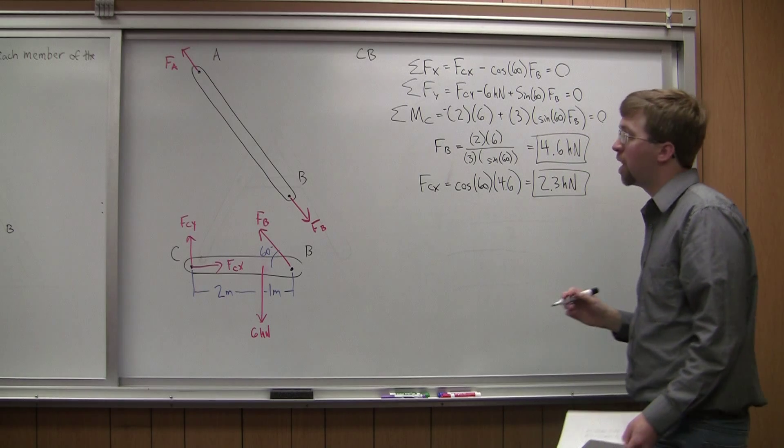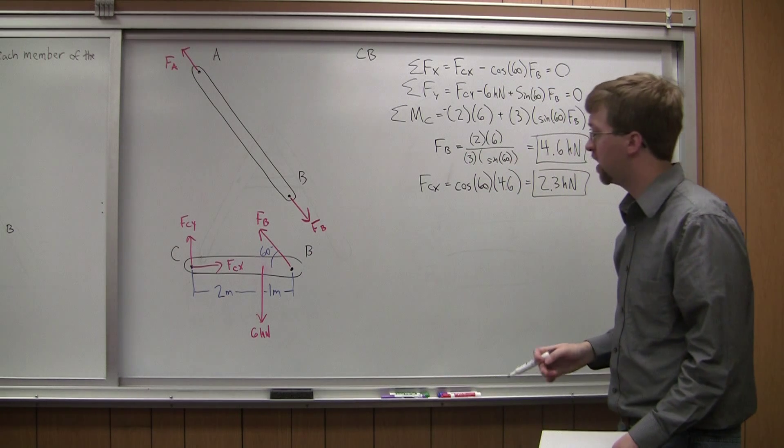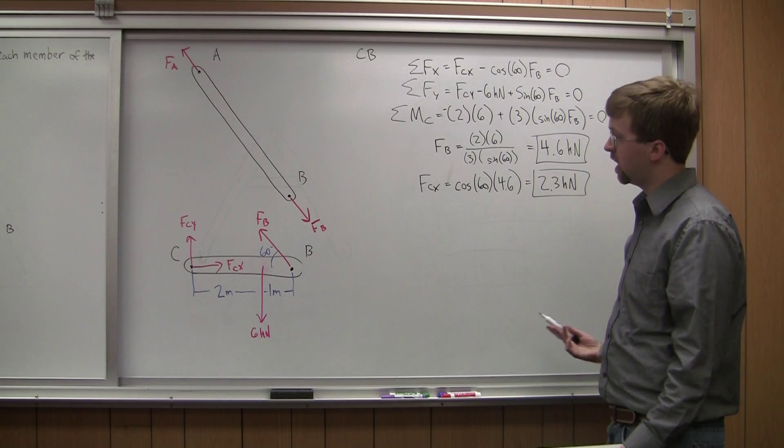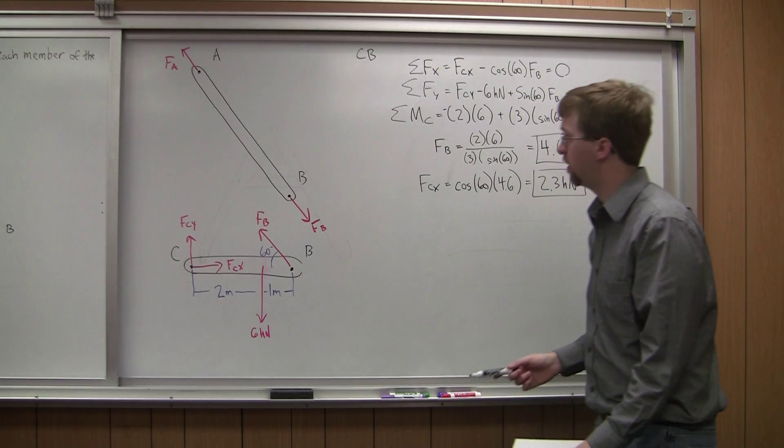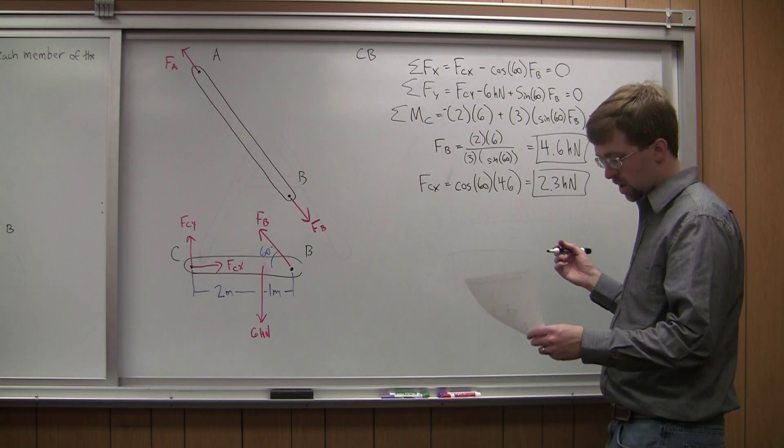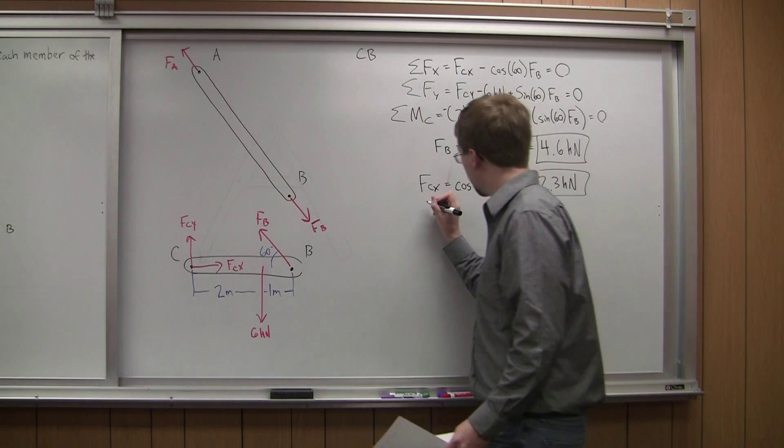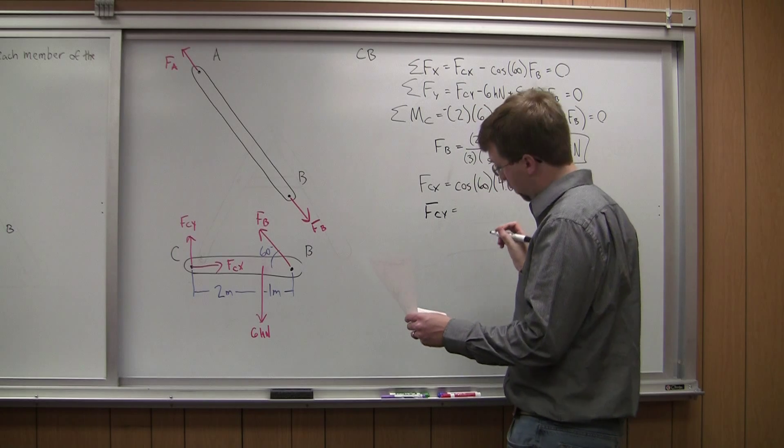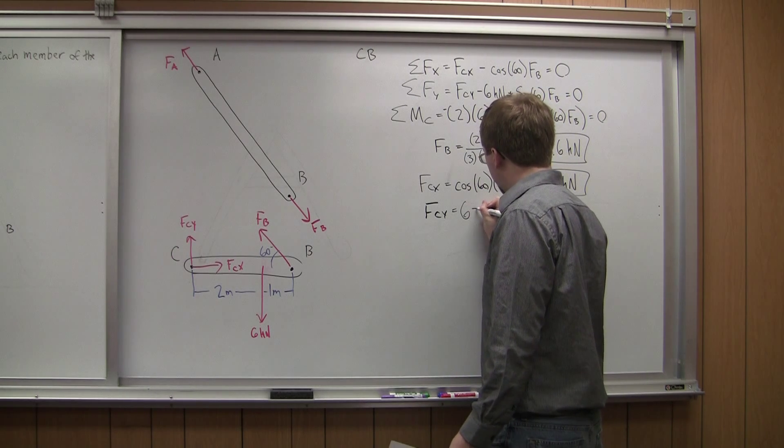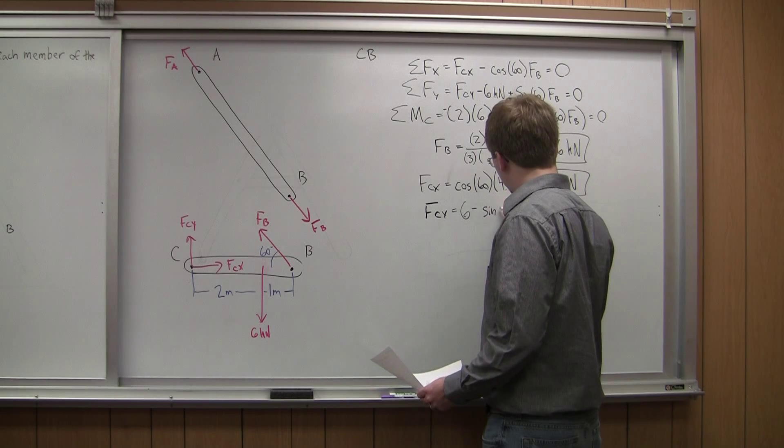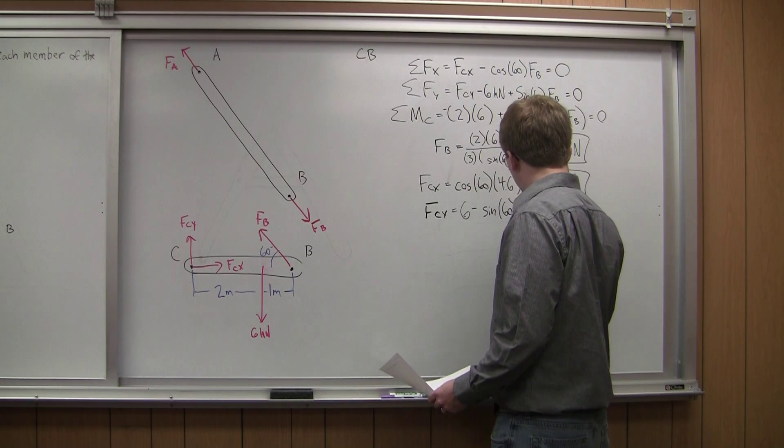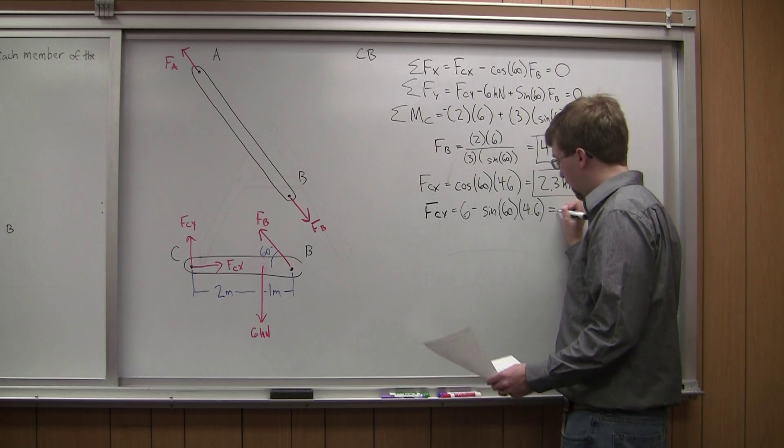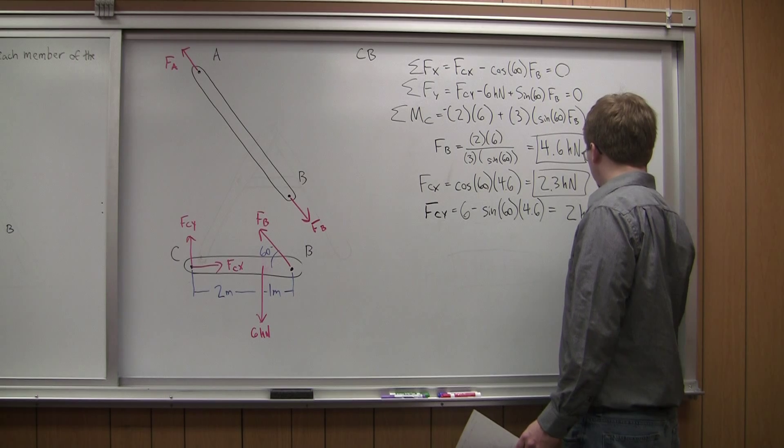And all of these are positive numbers, again, indicating that I'm guessing the right directions for all of these. So FCX actually does go to the right. FB does actually kind of pull up this direction on member CB. FCY is going to be equal to 6 minus sine 60 of 4.6. And that's going to give me a number equal to 2 kilonewtons.